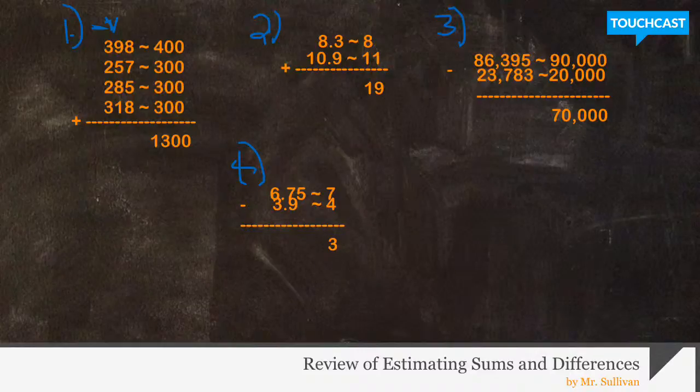If you take a look at example number two, we're looking at how to round decimals. 8.3 rounds to 8, 10.9 rounds to 11. Once again, you look at the decimal. If the number is five or greater, then you would round the whole number up. If it's less than five, then it stays the same.